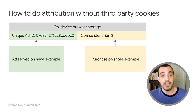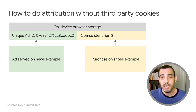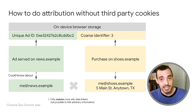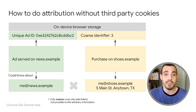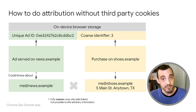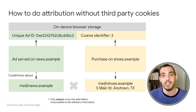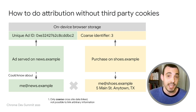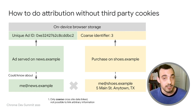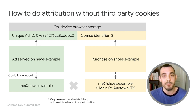Firstly, instead of the advertiser learning what conversion happened after an ad click, we can limit the advertiser to learning only a little bit of information about that conversion. Unlike with cookies, where you can learn an ad ID alongside an associated purchase ID, in our API we drastically limit the amount of information you can learn about a purchase — the conversion data — to only a small enum that describes it, like what type of conversion it is, or maybe a broad product category. This protects by default your identity on the advertiser site from being revealed to the context that served you an ad, and avoids the problem cookies have where arbitrary information can be linked.